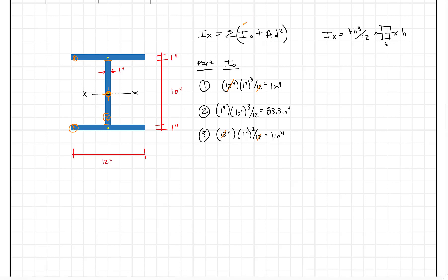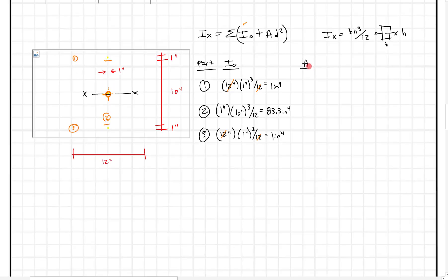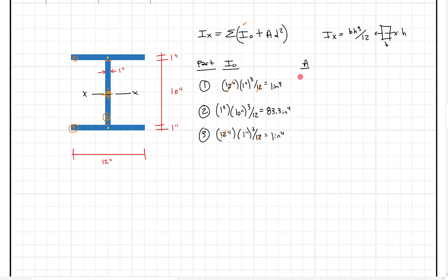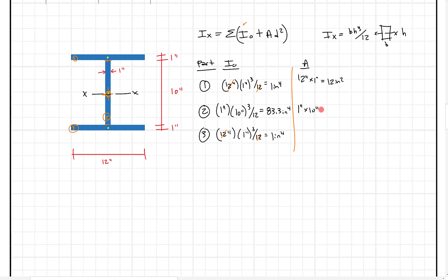Now we need the A and D terms — the AD² term. The area is straightforward. The area of part one is 12 inches times one inch, giving 12 square inches. The area of part two is one inch times 10 inches, giving 10 square inches. And the bottom, part three, is 12 inches by one inch, also 12 square inches.